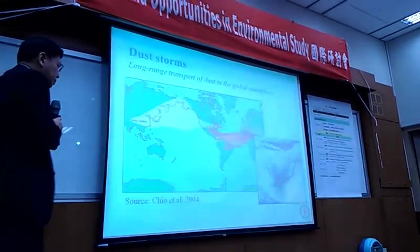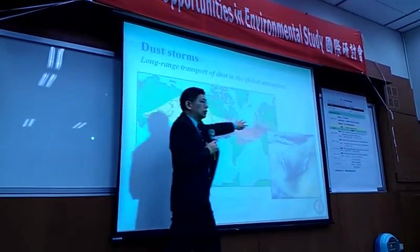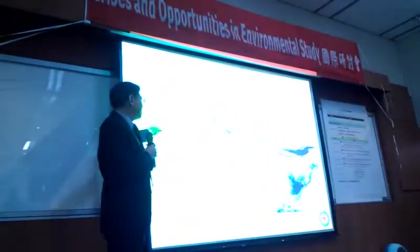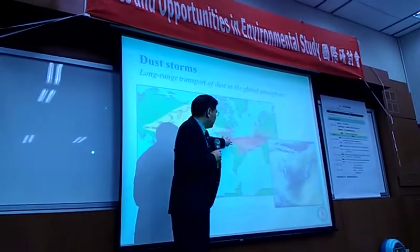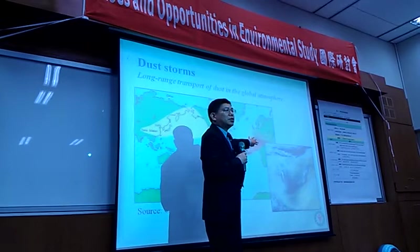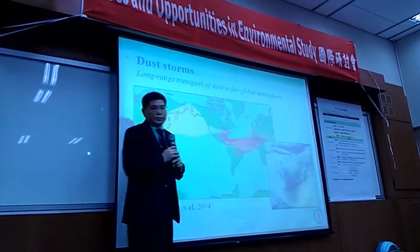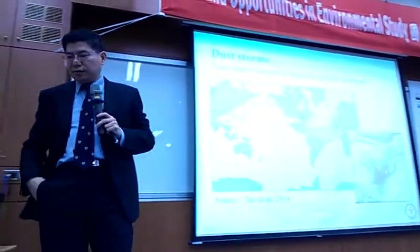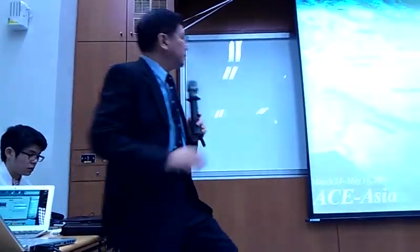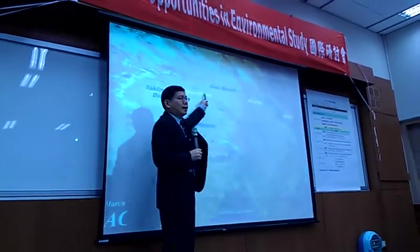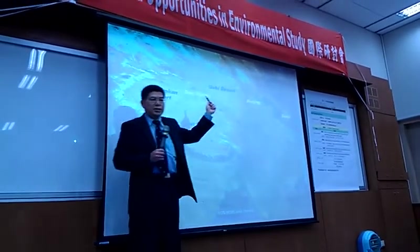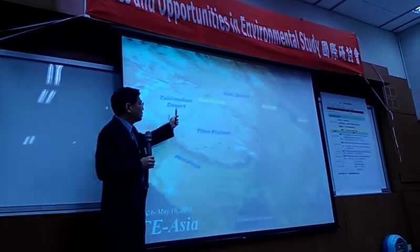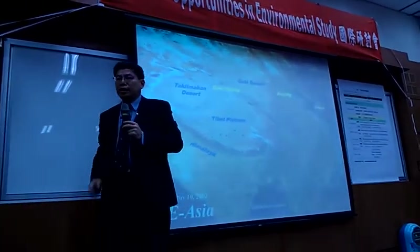This is dust storms worldwide — Asian dust storms and African dust storms. There's currently a lot of study going on for African dust storms affecting Europe. I have been doing this since 2002 on Asian dust storms — one of the pioneers in this area. Asian dust storms come from the Gobi area, currently a very important place for mining, especially for Mongolia, with a lot of global companies going there. Unfortunately, this is the origin of Asian dust storms.